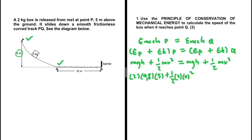The box is released from rest at point P, so the initial velocity is zero — we have v_i² = 0. This equals the potential energy at point Q: mass is still 2 kg, g = 9.8, but the height is zero at point Q, plus the kinetic energy at Q, which allows us to calculate the speed.